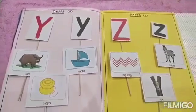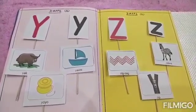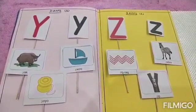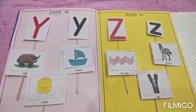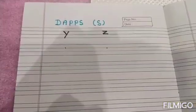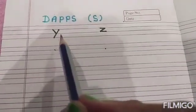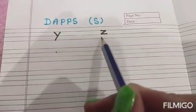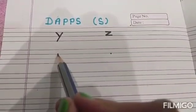Very good kids, clap for yourself! Now we will learn how to write letters Y and Z in our notebook. Okay? Kids, now we are going to write small letter Y and letter Z.